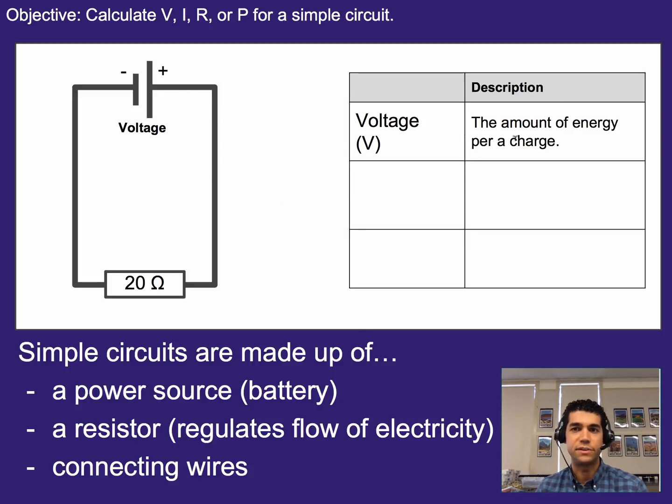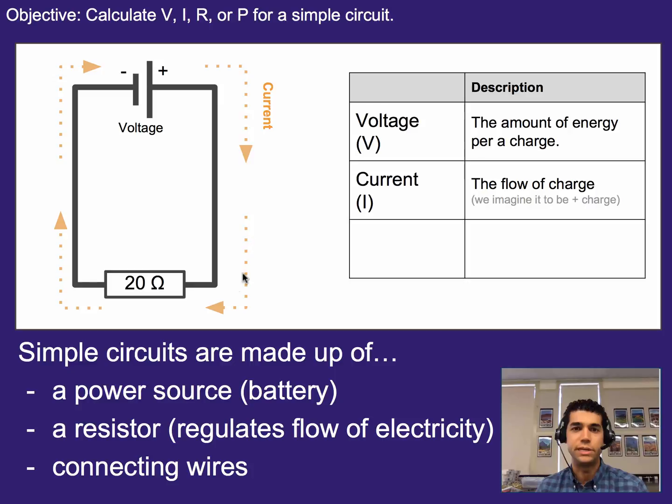So voltage is the amount of energy per charge, like I said before. Think of it as kind of how much energy each electron can deliver. Current is going to be how fast those electrons are flowing through our circuit. Now, it's important to know that with current, even though it's electrons flowing, we define current as the direction positive charge would be flowing, even though electrons are actually flowing in the opposite direction. So current always goes from positive to negative, even if that's not what's happening in real life. And then resistance is how hard it is for electricity to flow. So if we increase the resistance here, then current will flow a little bit less and a little bit less.